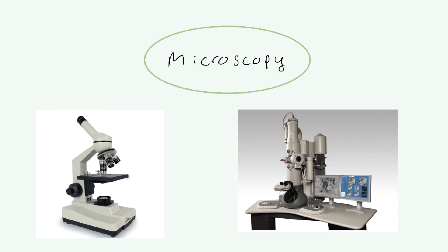Welcome to this video on microscopy, which is the study of things using microscopes. We use microscopes because some things, especially in biology, are way too small for us to see with our eyes. We're talking about things like cells, and when you zoom into the organelles inside the cells, those things are absolutely tiny and impossible to see with the naked eye. So we need something to help us — and that something is a microscope.